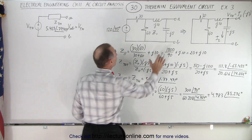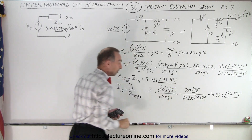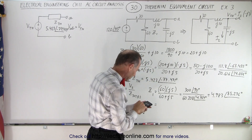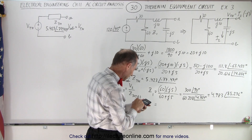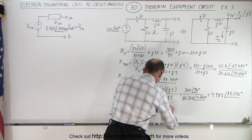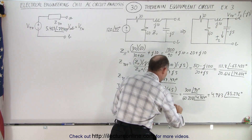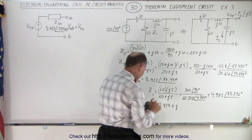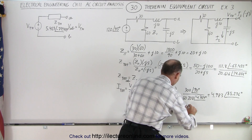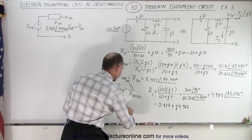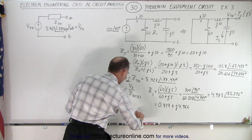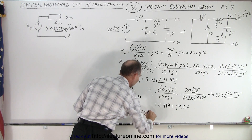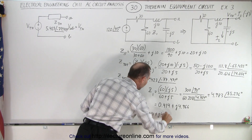Now we have the impedance of that branch and need to add it to the 30-ohm resistor. We reconvert Z1 to rectangular form: cosine of 85.236 times 4.983 = 0.414, and j times sine of 85.236 times 4.983 = j4.966. So Z_total as seen from the source equals 30 plus 0.414 plus j4.966, giving 30.414 plus j4.966.